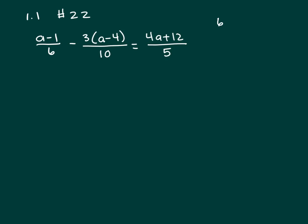Write down your denominators and break each of your denominators down into prime factors. So 6 is 3 times 2, 10 is 5 times 2, and 5 is just 5 times 1.